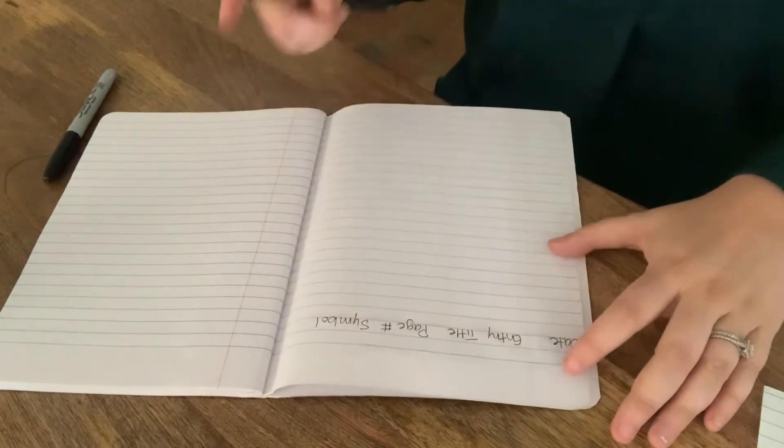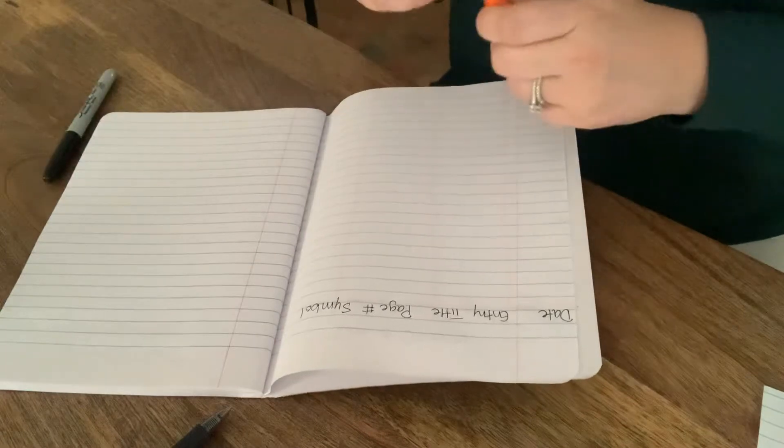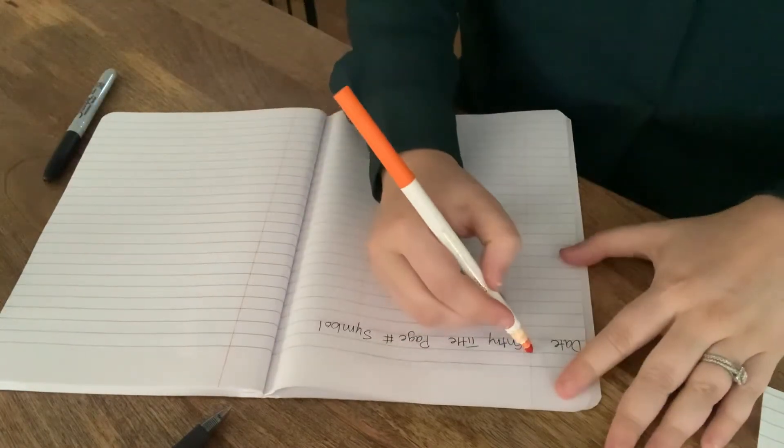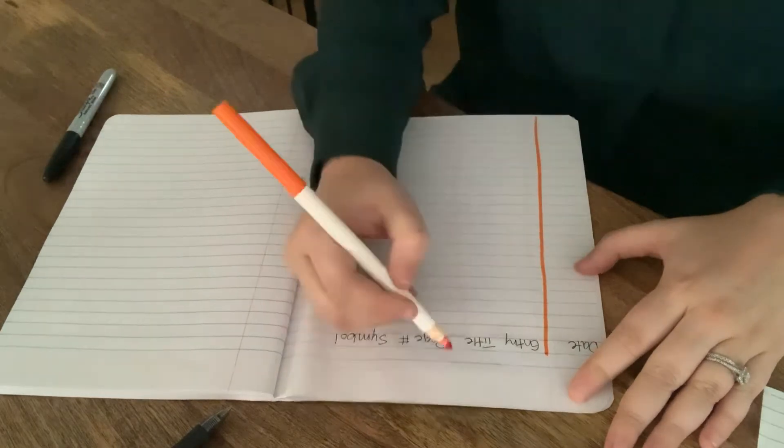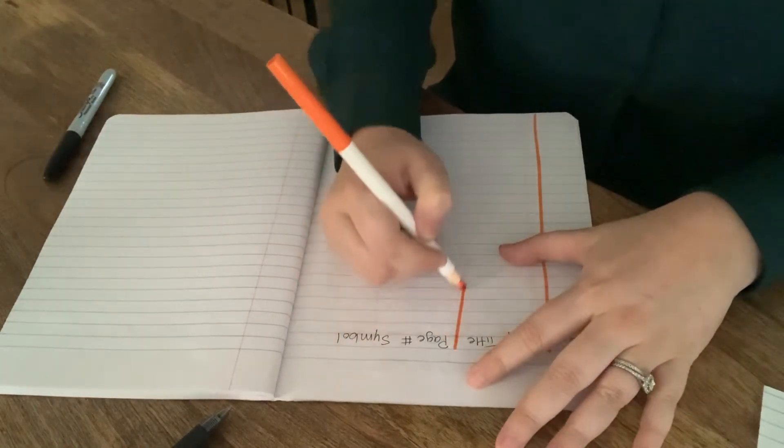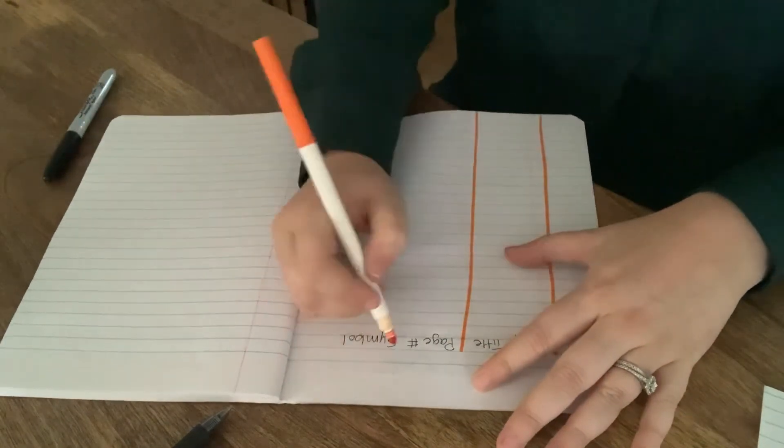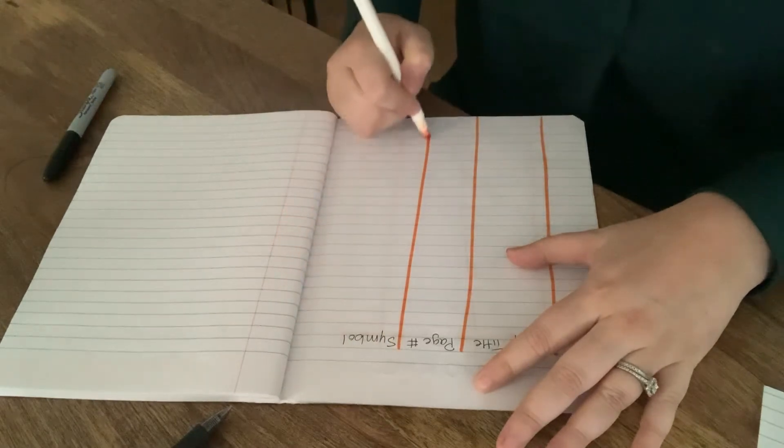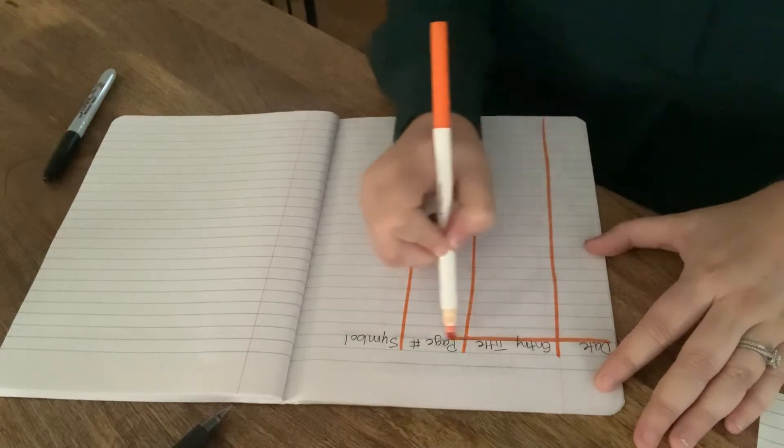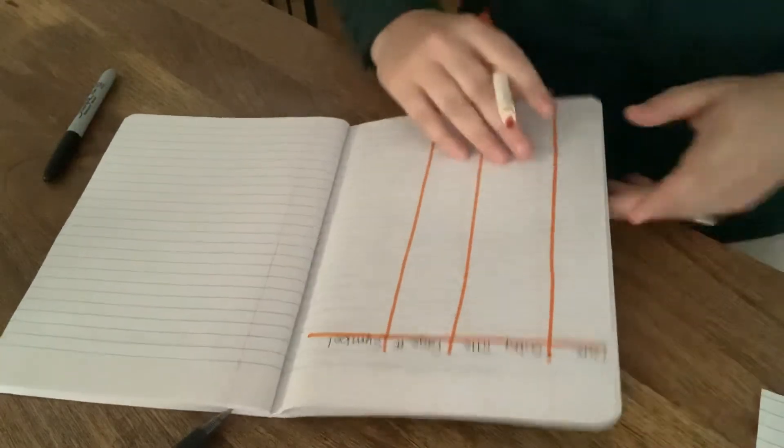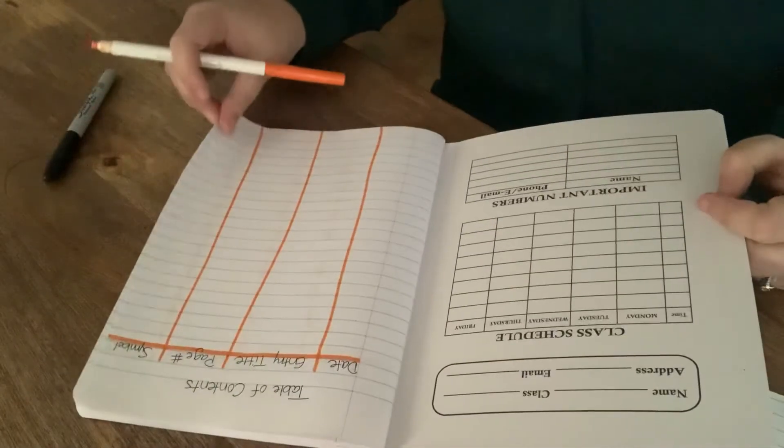All right. So we have our date, entry title, page number, and symbol. So we have created the table of contents.